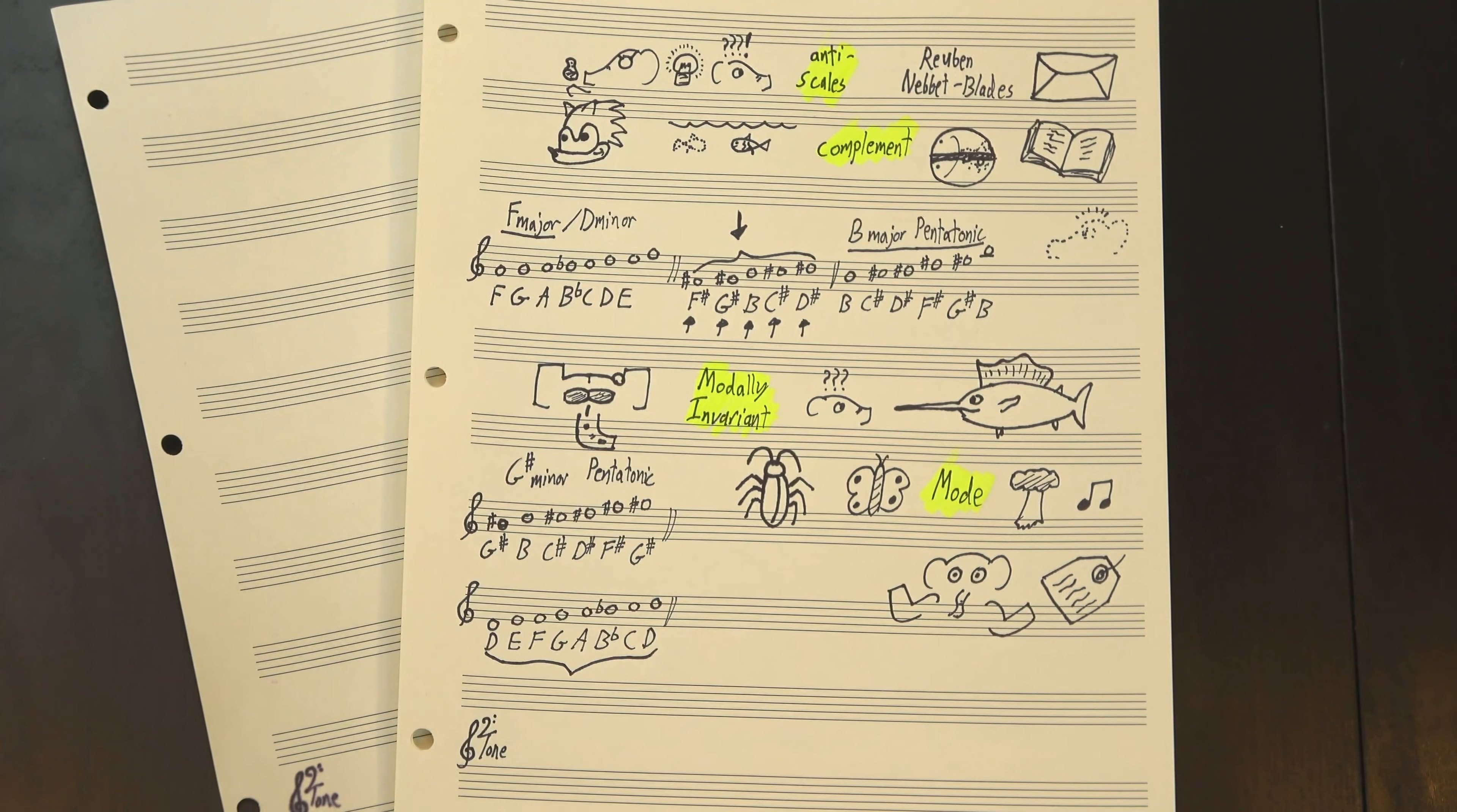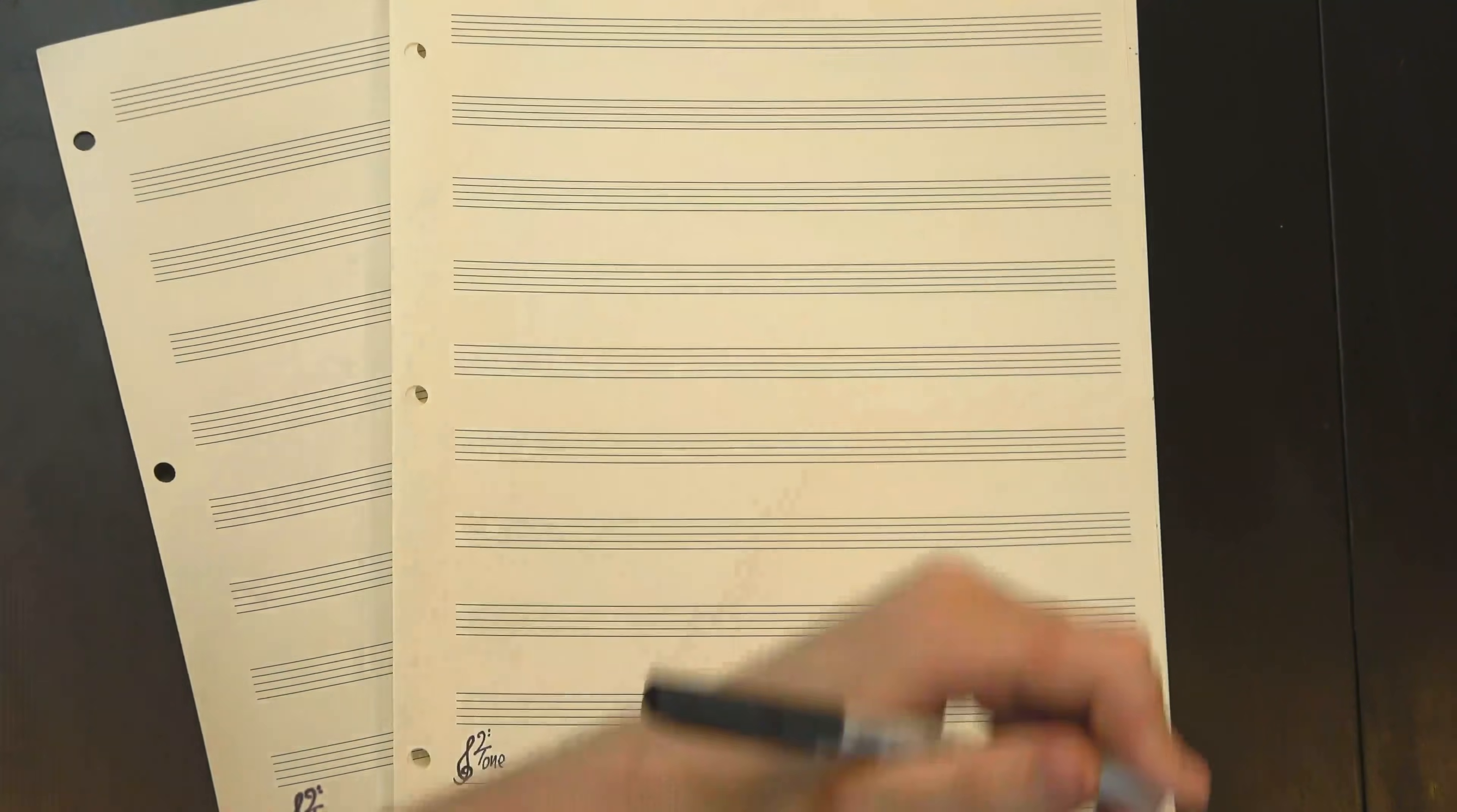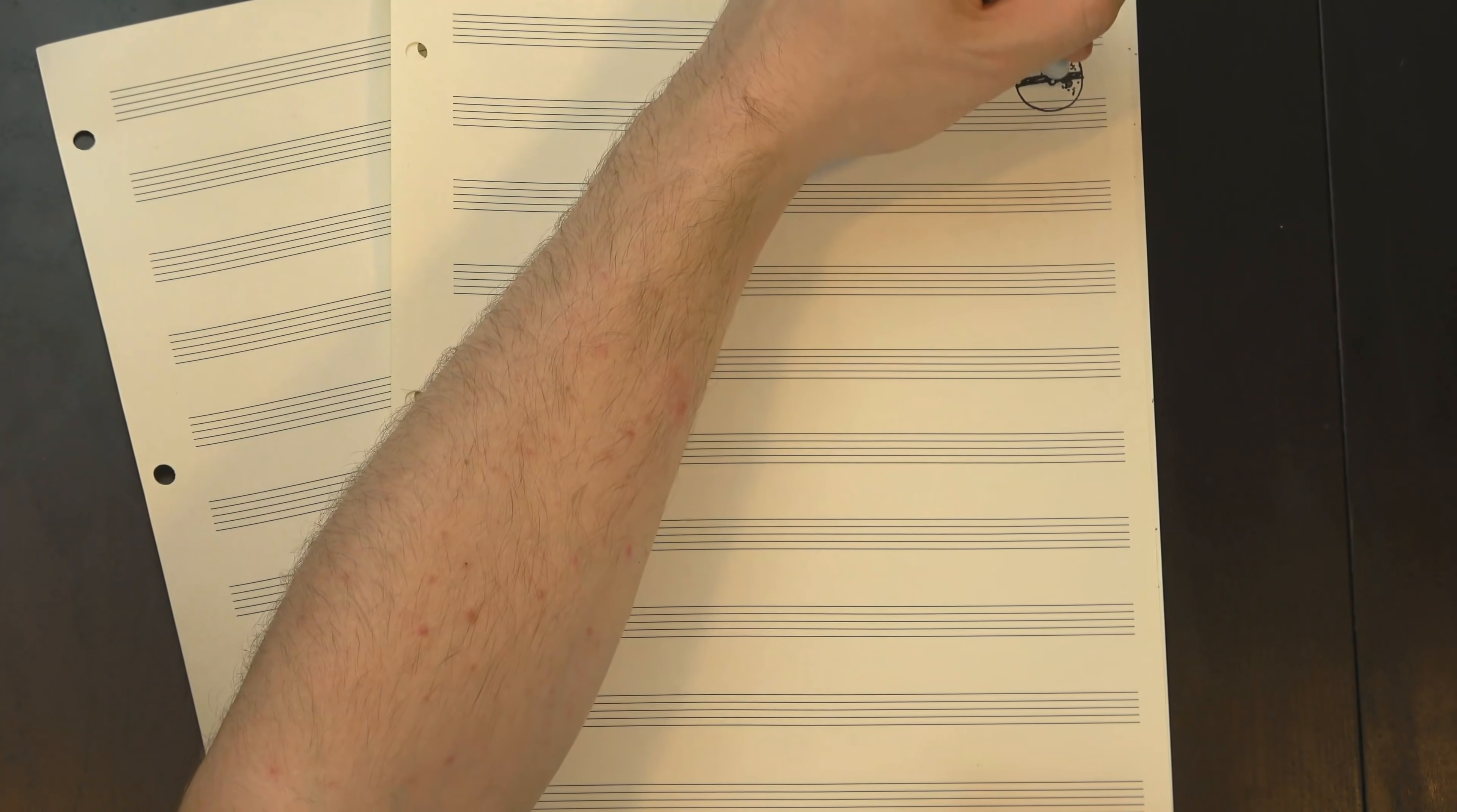So really assigning any scale names at all is kinda misleading. All we can really say is that these five notes, in some order, are the complement of these seven notes, in some order. Ruben's antiscales, on the other hand, work a little differently.